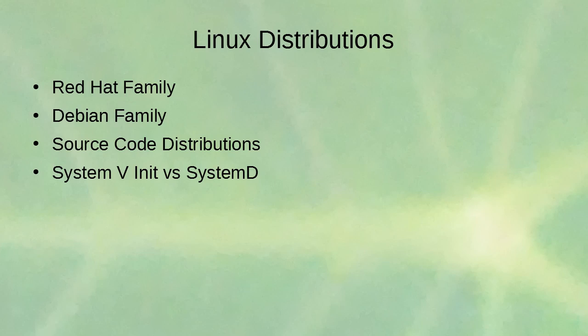The Debian family is basically the same as the Red Hat family but uses DEB packages instead of RPM packages. Red Hat tends to focus more on corporate use, while Debian focuses more on the end-user experience.